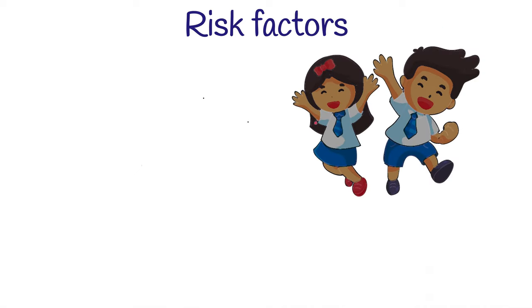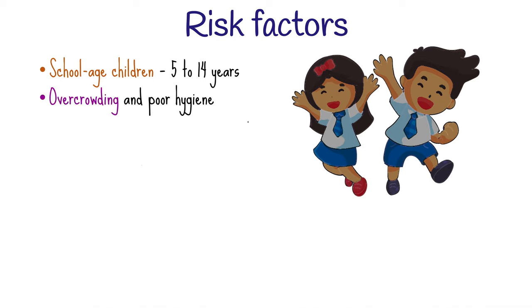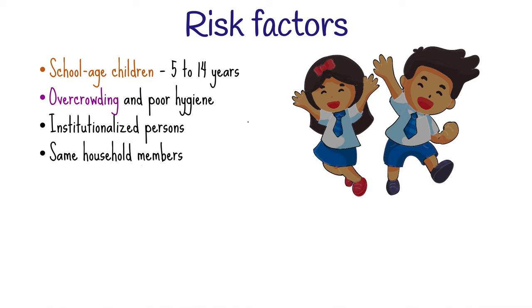Enterobiasis is worldwide in distribution and often occurs in children, mostly school-age children between the ages of 5 and 14 years. Overcrowding, poor hygiene and personal care are usually the promoting factors for the infection. Other people at risk include institutionalized persons, household members of people infected with pinworms, and those in child care centers.